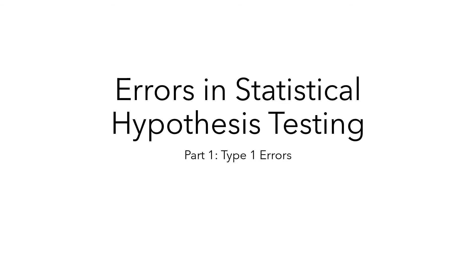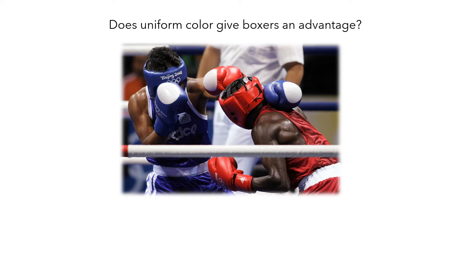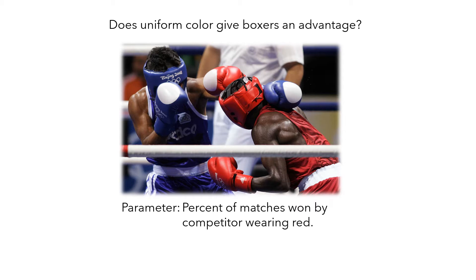Let's start by looking at a scenario. In some Olympic sports, like boxing, in each match competitors are randomly assigned to wear either a red or blue uniform. Researchers asked, does uniform color give boxers an advantage? This seems unlikely since colors are randomly assigned. Surely it's just the athlete's ability and training rather than the uniform that give them an advantage. The parameter is the percent of matches won by the competitor wearing red, which we'll write as pi.